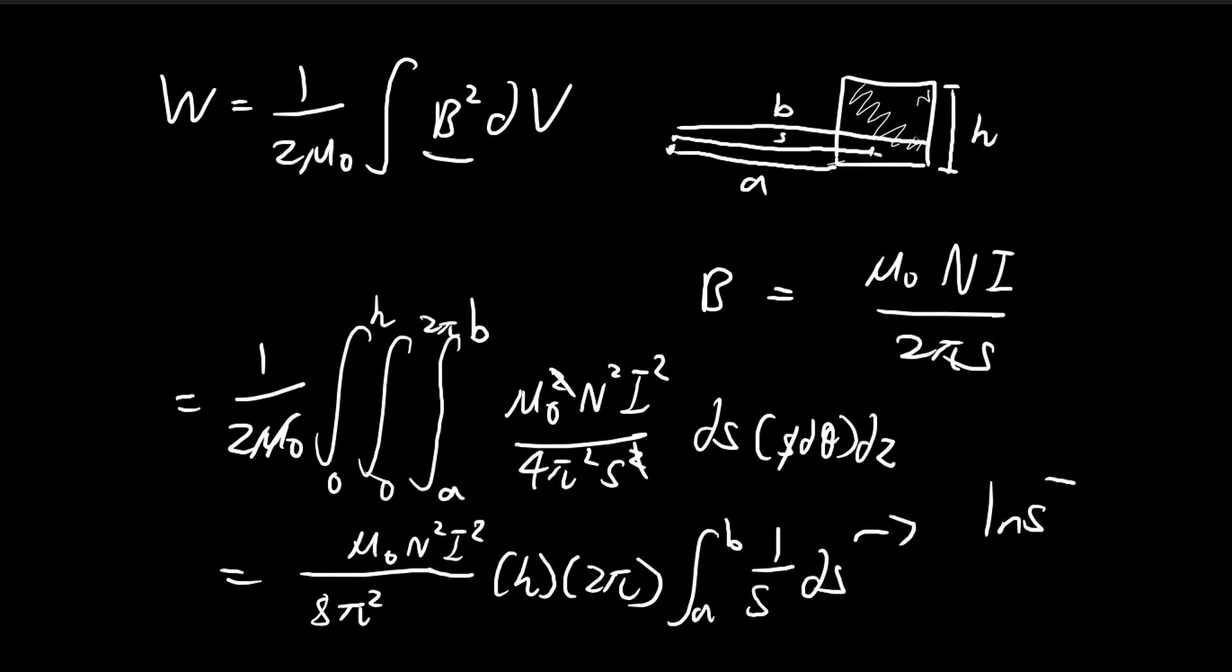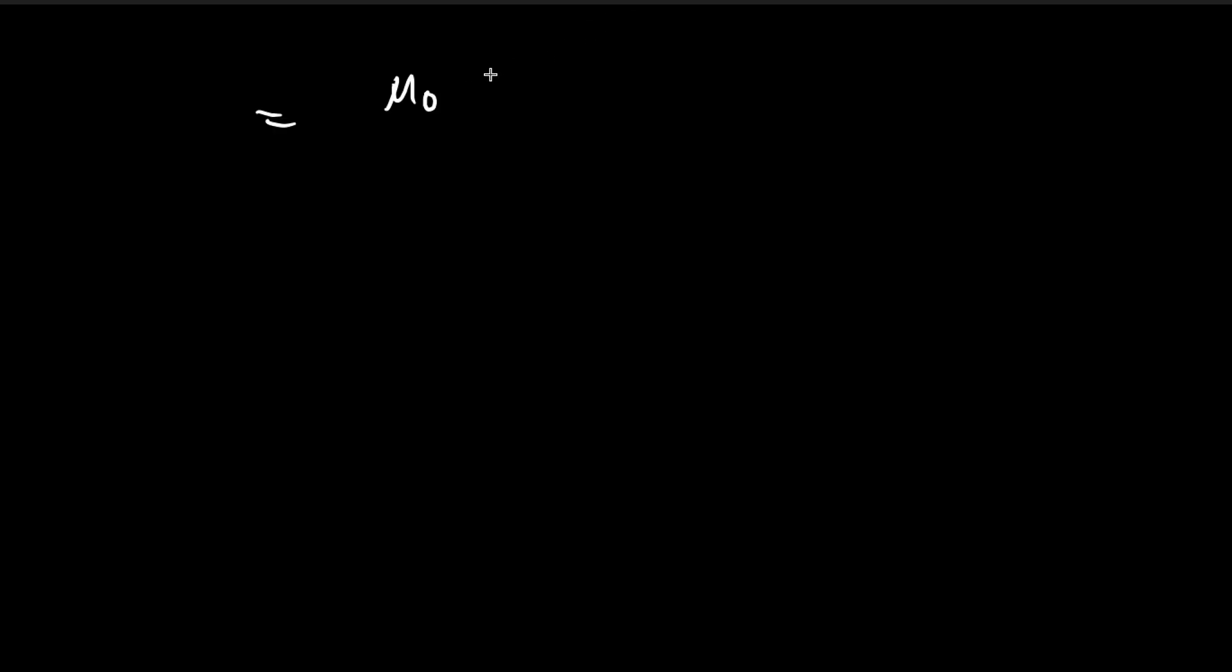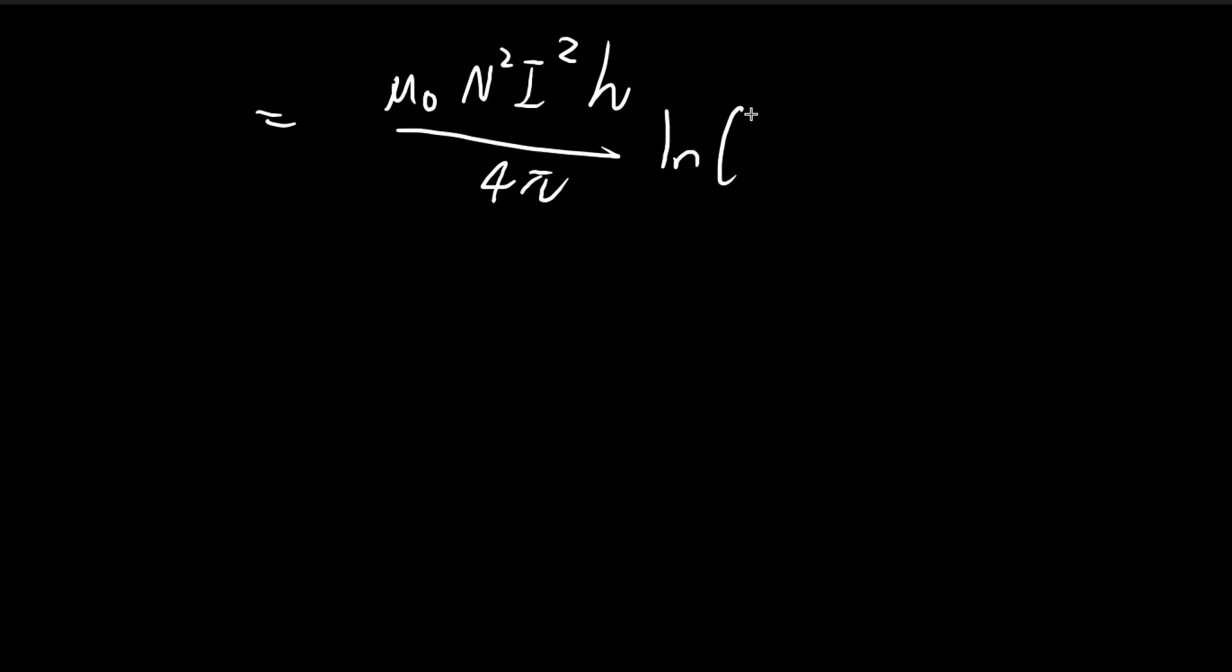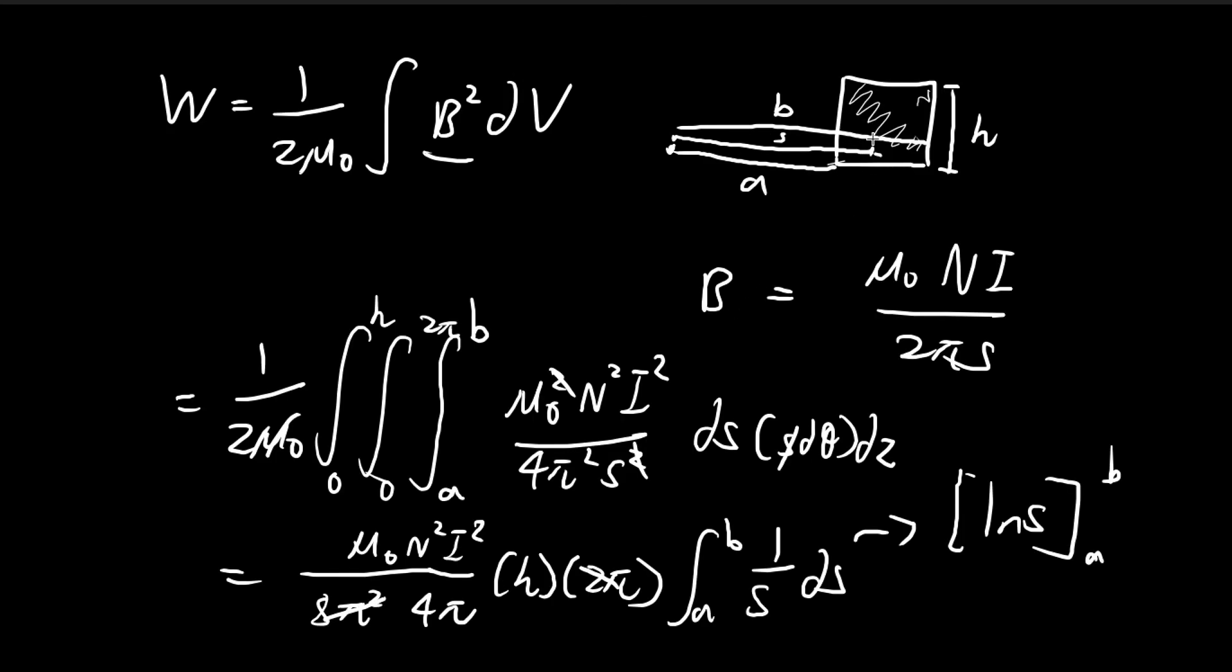Once you evaluate this integral, it's equal to the natural log of s evaluated from a to b. These constants cancel out. So we have μ₀N²I²h divided by 4π, and then multiplied by this, which is natural log b minus natural log a, which equals natural log of b over a. We found the amount of energy that's stored inside the magnetic field generated by a toroid.